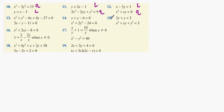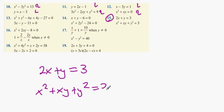For example, I'm going to choose number 15. 2x plus y equals 3 is the linear. x squared plus xy plus y squared equals 3 is the quadratic.